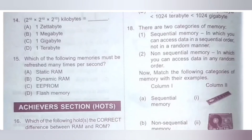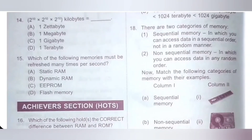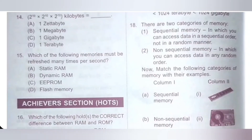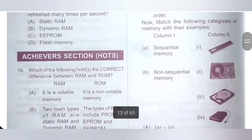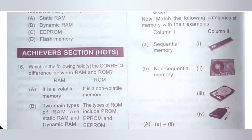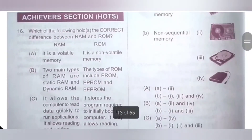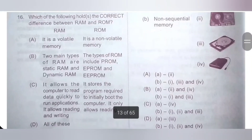Eighteenth question. There are two categories of memory: sequential memory, in which you can access data in a sequential order not in a random manner; and non-sequential memory, in which you can access data in any random order. Match the categories with their examples. A cassette is an example of sequential memory, so A matches 2. RAM, hard disk, and external hard disk are all examples of non-sequential memory, so B matches 1, 3 and 4. Option A is the correct answer.